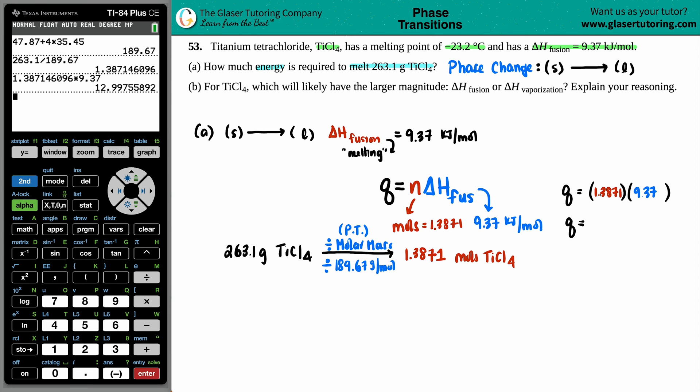Press enter. And you get 12.997. So, if we wanted to round to 3 sig figs, it would be 13.0. And that's in kilojoules. Just watch out. The delta H in this equation was in kilojoules. So, kilojoules have to come back out. And that is the energy required to melt 263.1 grams of the TiCl4. So, letter A is done.